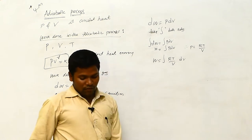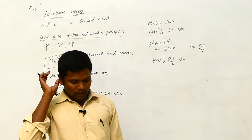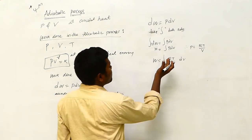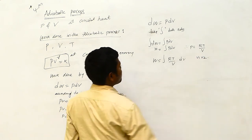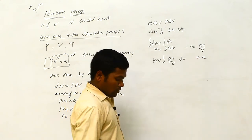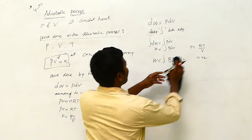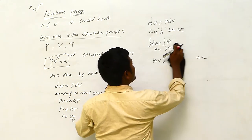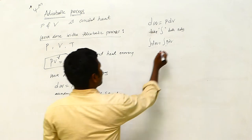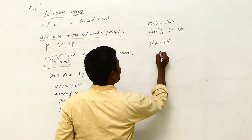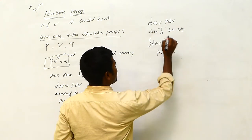Volume is changing from where to where? Volume changes from V1 to V2. We already have the relation PV to the power gamma equals K (constant), so no need to substitute from the ideal gas equation. We can directly substitute this relation.